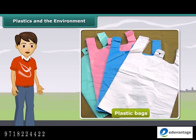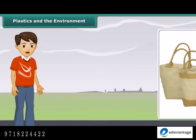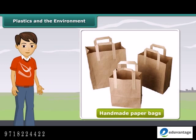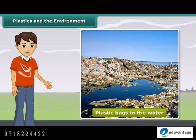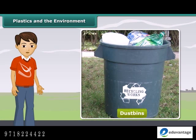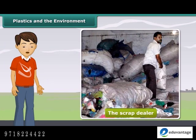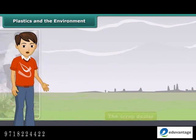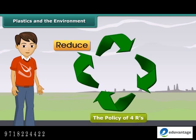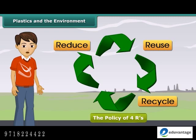There are a number of steps that we can take as environmentally conscious citizens to safeguard our environment from the growing menace of plastics. We can replace plastic shopping bags with jute bags or handmade paper bags. Instead of littering everywhere, particularly on roads, we should put plastic objects in dust bins marked as non-biodegradable, segregating them from biodegradable wastes. Sell plastic scraps to the scrap dealer for recycling. Adopt the policy of 4 R's: reduce, reuse, recycle and recover.